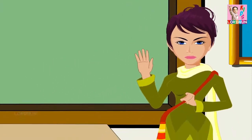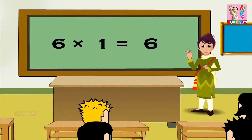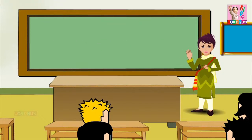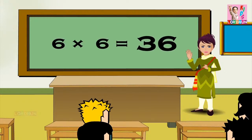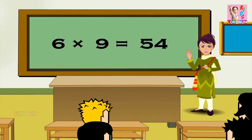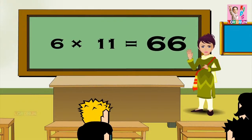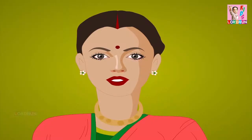6 1s are 6, 6 2s are 12, 6 3s are 18, 6 4s are 24, 6 5s are 30, 6 6s are 36, 6 7s are 42, 6 8s are 48, 6 9s are 54, 6 10s are 60, 6 11s are 66, and 6 12s are 72. Children, take over.